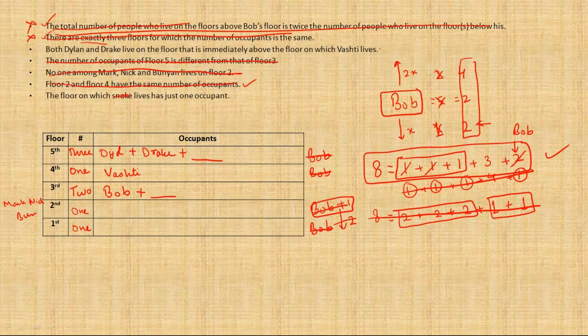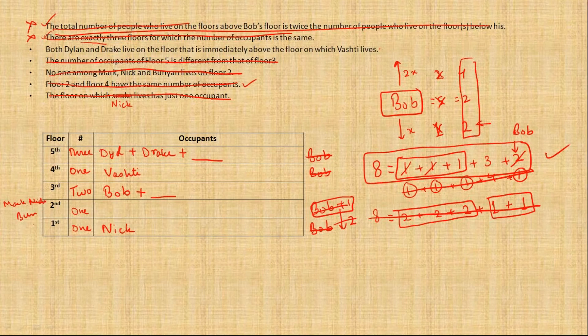Then the last point also says that the floor on which Nick lives has just 1 occupant. So the floor on which Nick lives has just 1 occupant, which tells us that Nick must be living on the 1st floor. So this is also done. Alright, so Nick is done. Now Mark and Bunyan both do not live on the 2nd floor. So who is left? Kozilik is left, and he must be living on the 2nd floor.